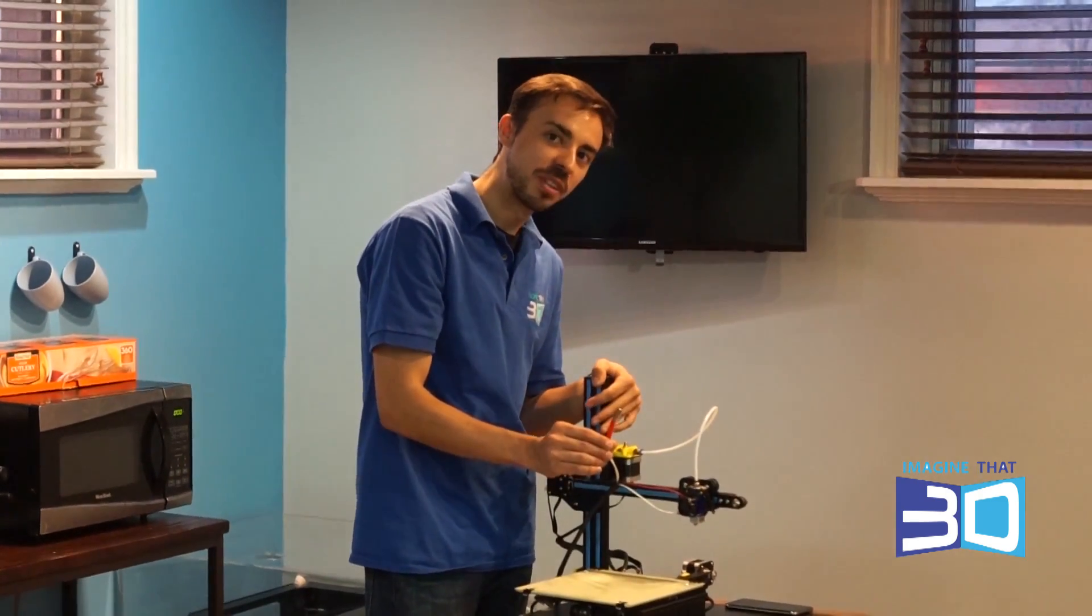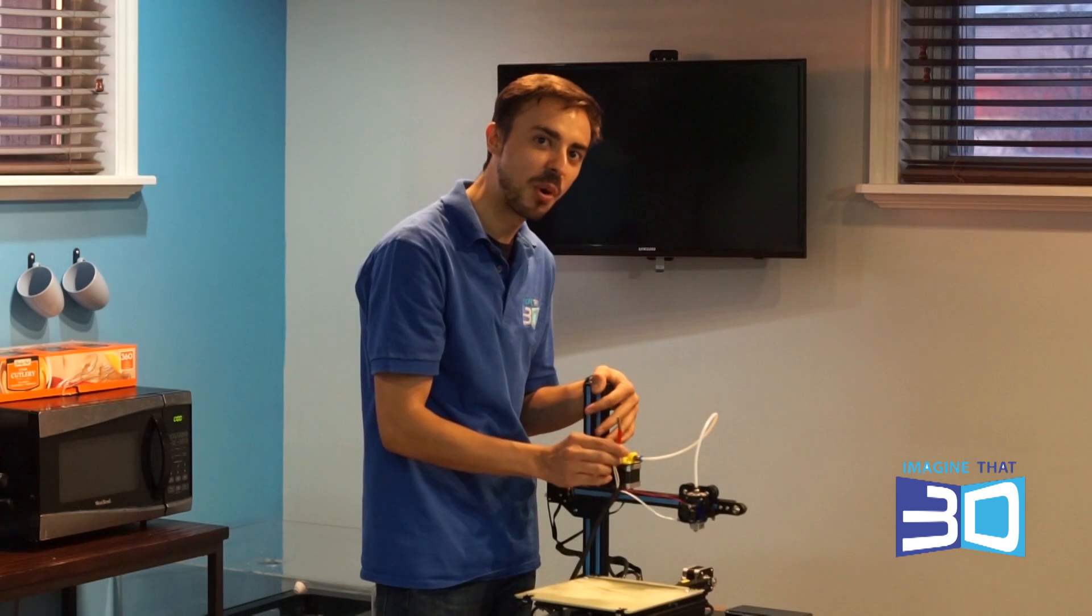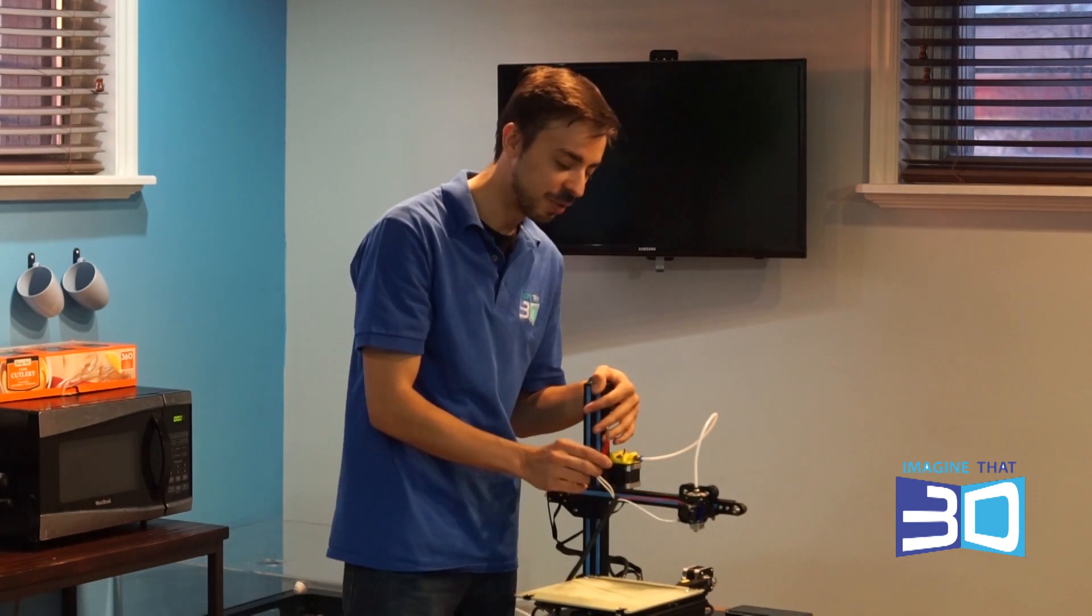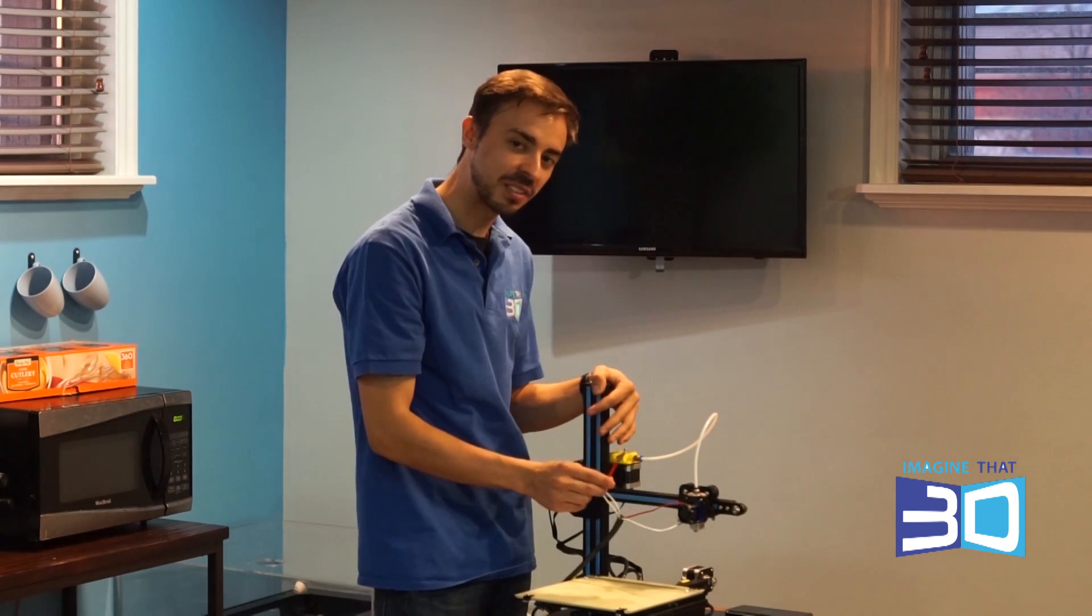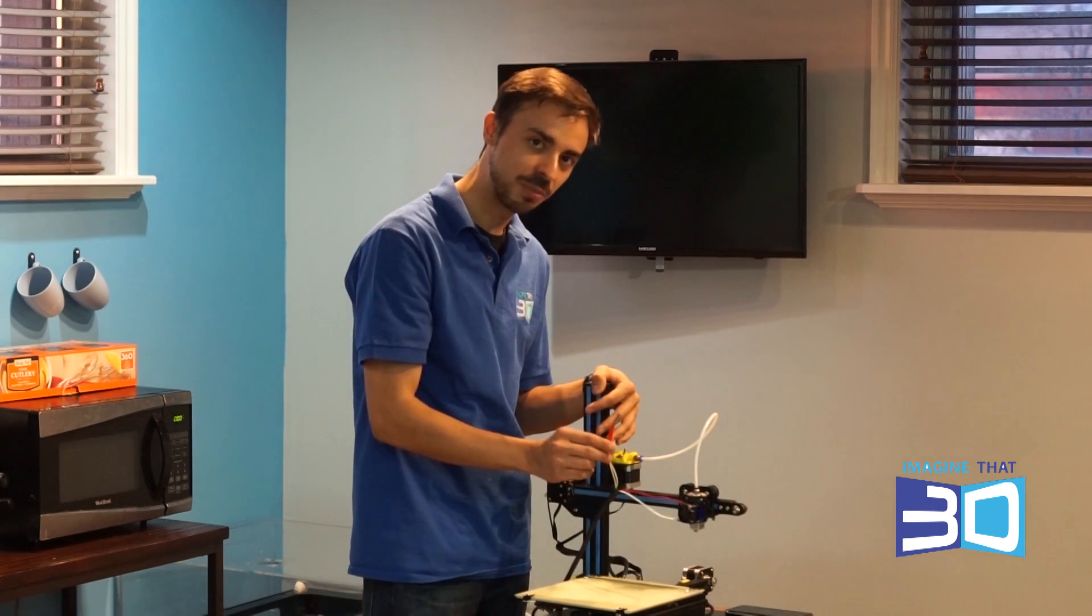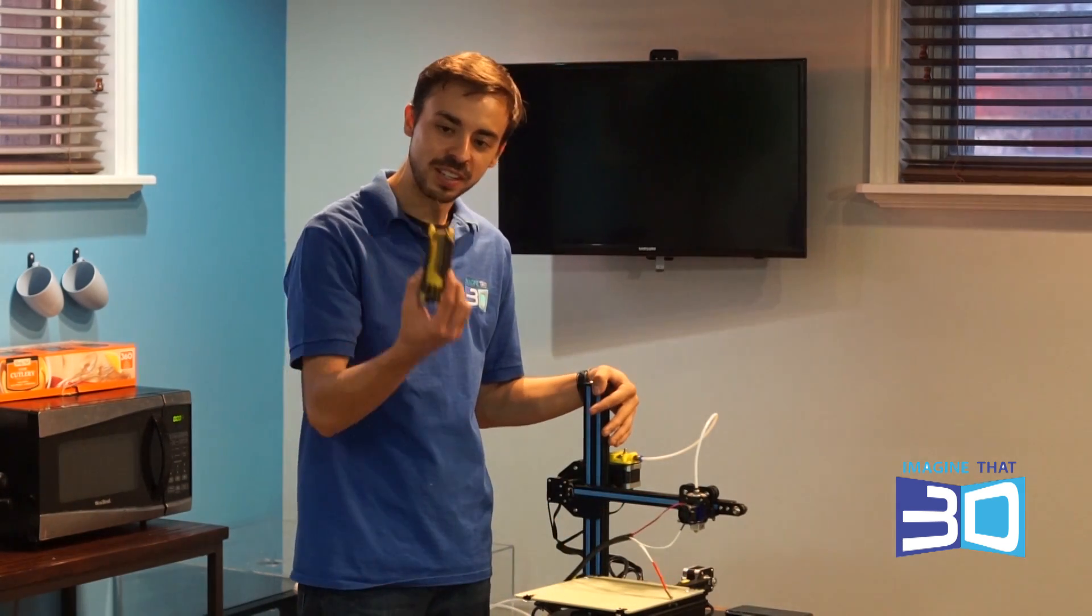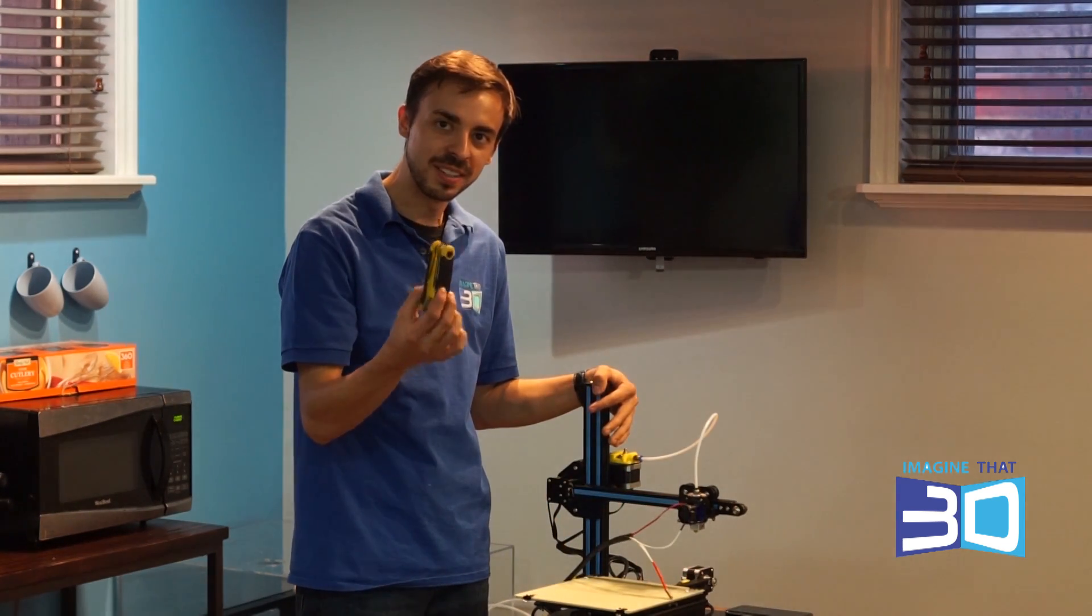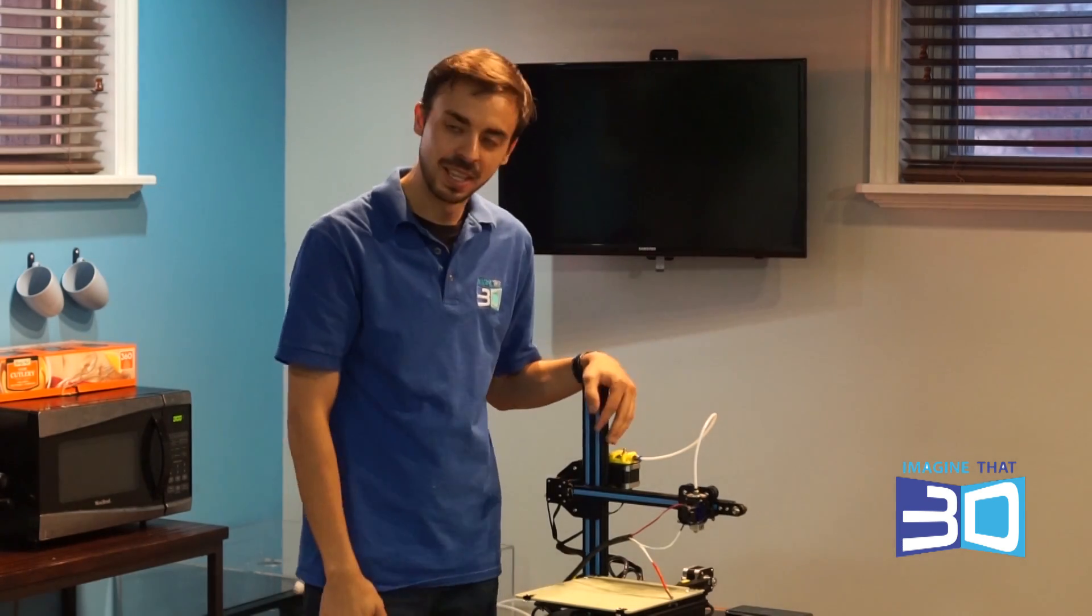What happens if your thermocouple goes out? This is the component that makes your extruder hot. So if you're no longer getting heat, your plastic isn't extruding right, this is your problem. All you're going to need is a 2mm hex wrench and some patience.